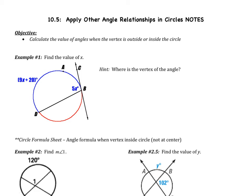Welcome ladies and gentlemen to the fifth video of chapter 10, which is 'Apply Other Angle Relationships in Circles.' We have one objective: we're going to calculate the values of angles when the vertex is outside or inside the circle. So far we've calculated central angles, where the vertex is at the center, and inscribed angles, where the vertex is on the circle. We're going to learn two other formulas today.